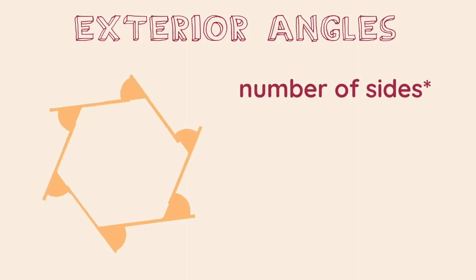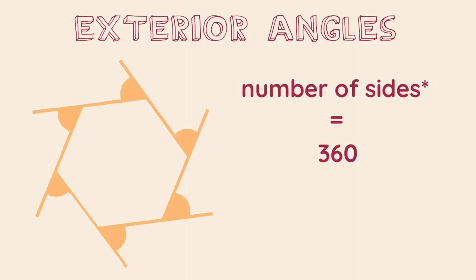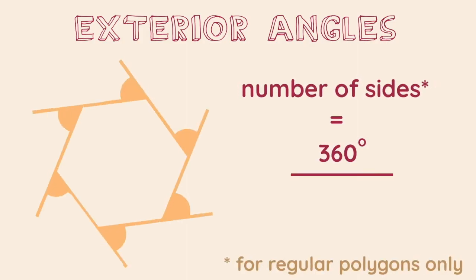For a regular polygon only, we can find the number of sides of the polygon by dividing 360 by the exterior angle.